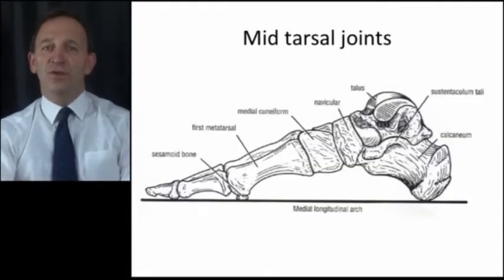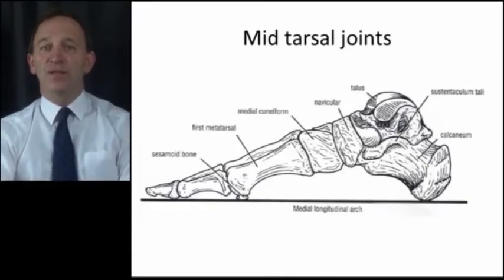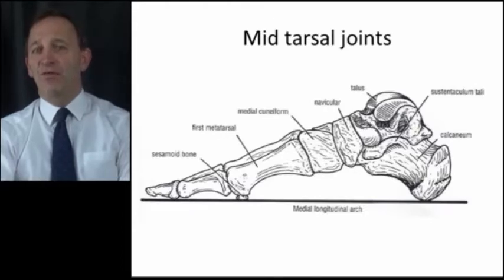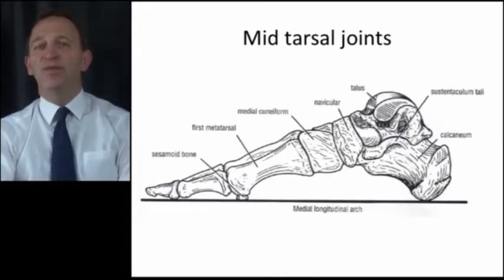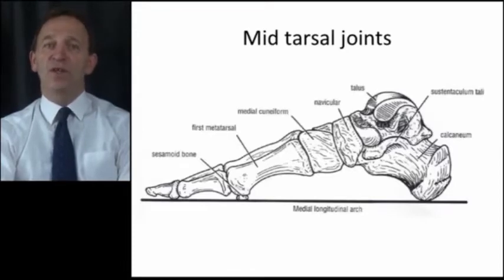The mid-tarsal joints are a complex of small joints that form the arch of the foot, as seen in this diagram. They are difficult to isolate and identify on examination but are often the site of pain and inflammation in osteoarthritis and after injury. Passive examination can be used to determine if any of these three main joint areas that comprise the ankle and hind foot are the cause of pain or are restricted in movement.